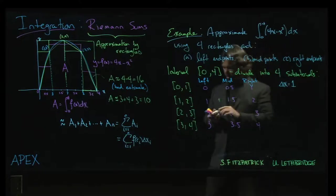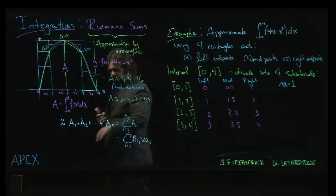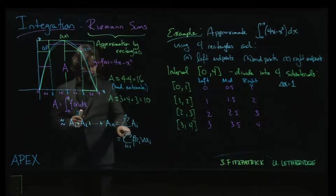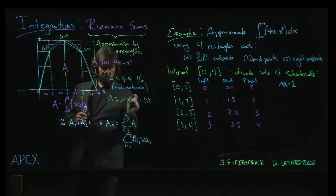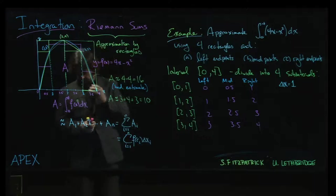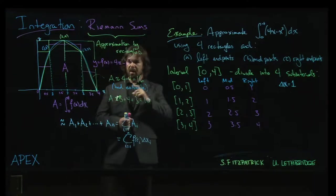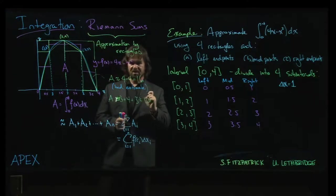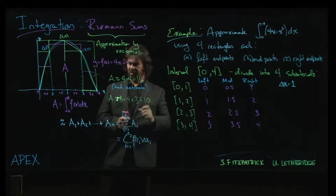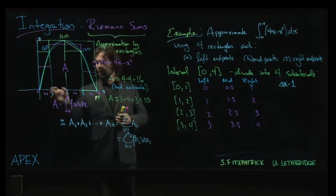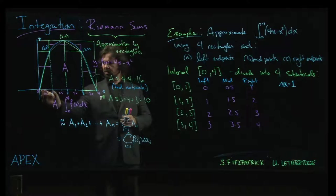In general when you're calculating these areas, you could in principle use a different width for each rectangle. They don't have to be fixed width, but calculations are often simpler if you do add that as a requirement. So we have the same delta x for all four intervals - delta x is one in each case.